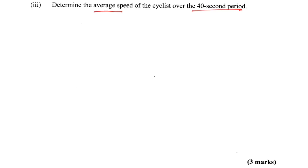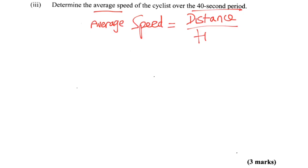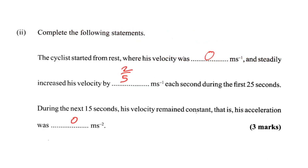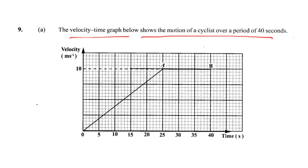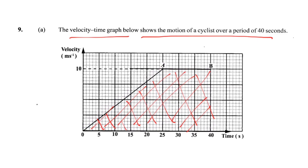The last part of the question: average speed of the cyclist over the whole 40-second period. You should know that average speed equals distance over time taken. But where do we see distance in this graph? We saw distance nowhere in this graph directly. But it is actually there — the distance in a velocity-time graph is the area underneath the graph.